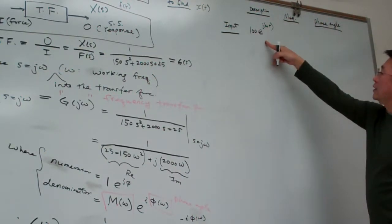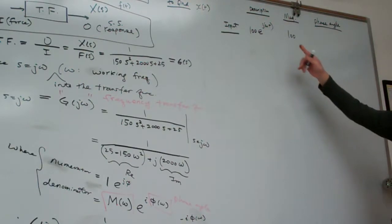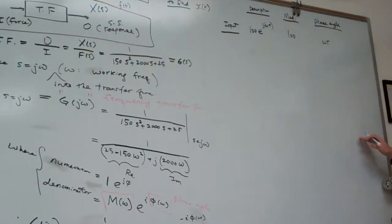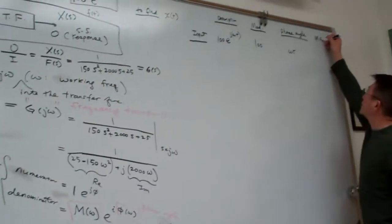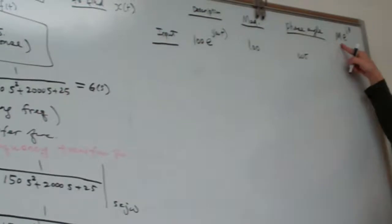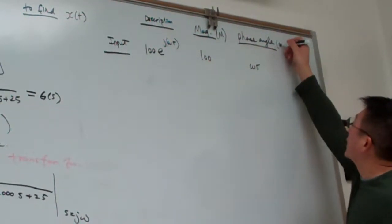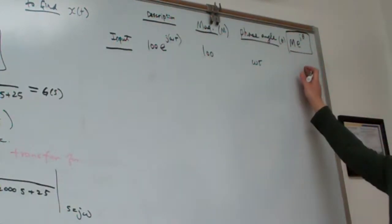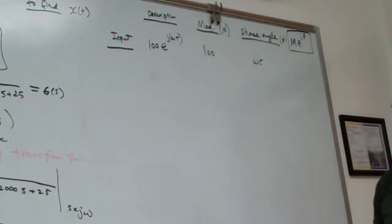So for the input we have is from our force, so that has the magnitude. So basically the description is 100 e times j omega t. So that's the general description. And here I want to further classify the information in terms of the magnitude and in terms of the phase angle. So for the input, we have a magnitude equal to 100. And this is the phase angle that's omega t.